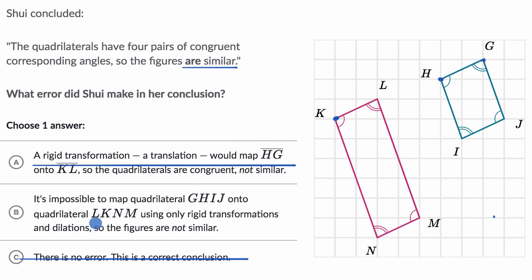So our deductive reasoning tells us it's probably choice B, but let's just read it. It's impossible to map quadrilateral GHIJ onto quadrilateral LKNM using only rigid transformations and dilations so the figures are not similar. Yeah, that's right.